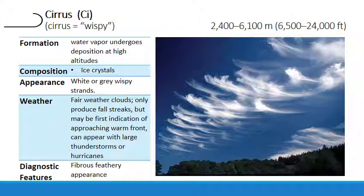We consider cirrus to be fair weather clouds, at least for the next day. The precipitation that falls from them — which we can sometimes see — is called a fall streak. These clouds also form as high-altitude outflow clouds from hurricanes and when liquid water droplets freeze in large thunderstorms.